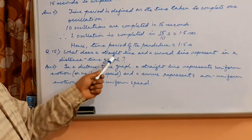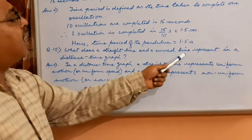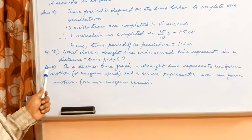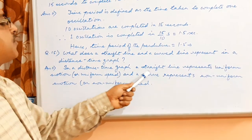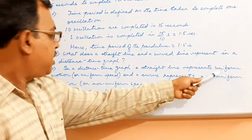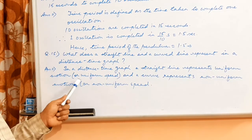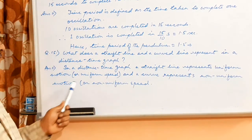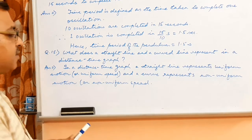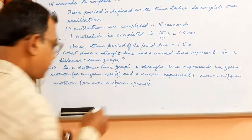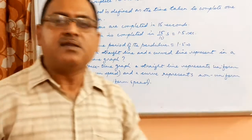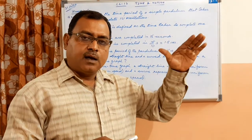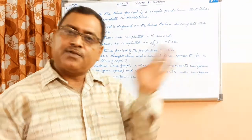What does a straight line and a curved line represent in a distance time graph? So answer is: in a distance time graph, a straight line represents uniform motion or uniform speed, and a curve represents non-uniform motion or non-uniform speed. Clear? So I think this question was left out, I missed it somehow, so please take care. You must write this down. If you have written the numericals first, no problem. After finishing the numericals, write this question definitely.